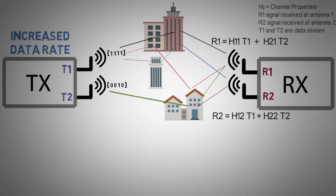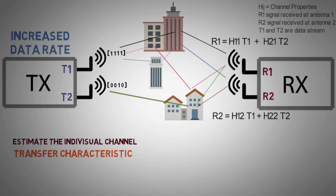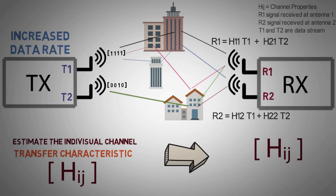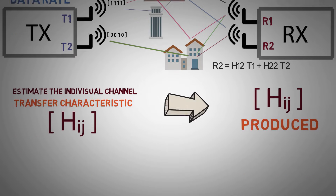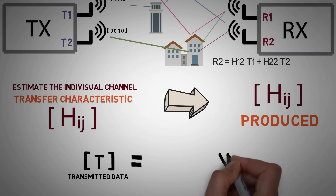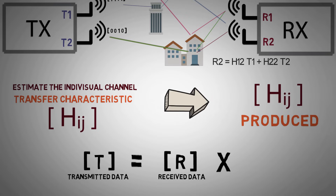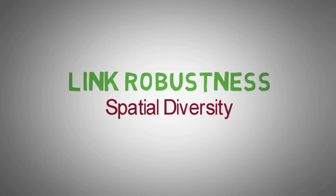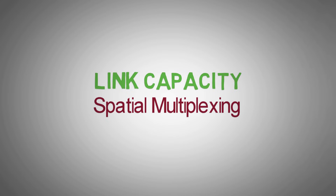First, the MIMO system decoder must estimate the individual channel transfer characteristics to determine the channel transfer matrix. Once all of this has been estimated, the matrix H can be produced, and the transmitted data streams can be reconstructed by multiplying the received vector with the inverse of the transfer matrix. This is how we can achieve link robustness using spatial diversity and effective use of link capacity using spatial multiplexing.